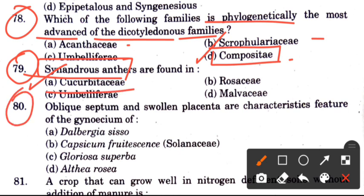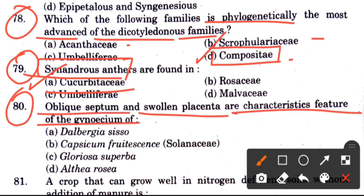Question: Oblique septum and swollen placenta are characteristic features of the gynoecium of — the answer is C, Gloriosa superba, which has oblique septum and swollen placenta.